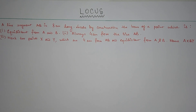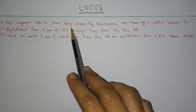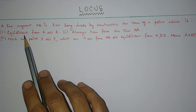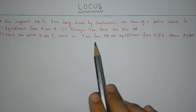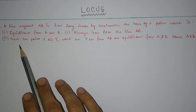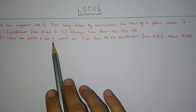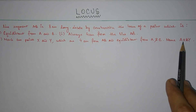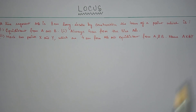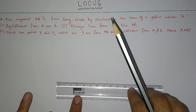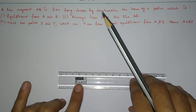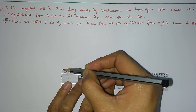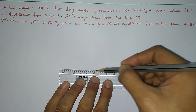Moving on to the third question: a line segment AB is 8 cm long. You have to locate by construction the locus of points which are: number one, equidistant from A and B; number two, always 4 cm from the line AB; number three, mark two points X and Y which are 4 cm from AB and equidistant from A and B, and name the figure AXBY. First we construct a line segment 8 cm long using a scale from 0 to 8.